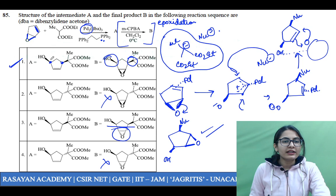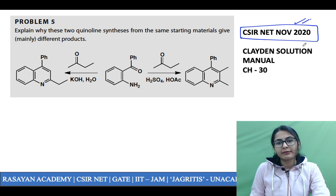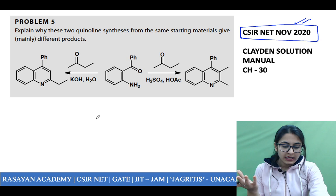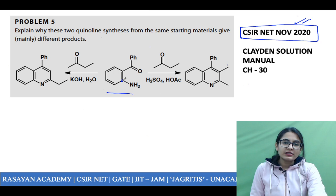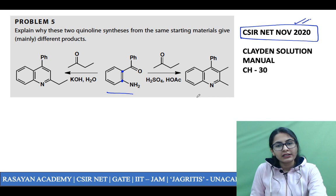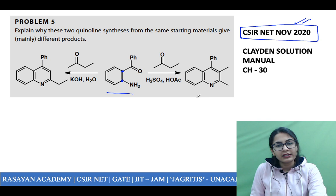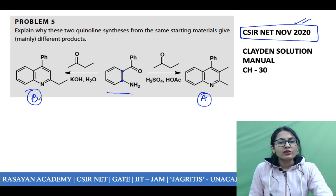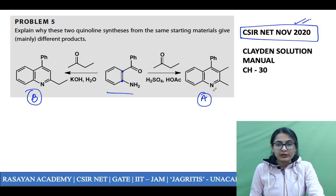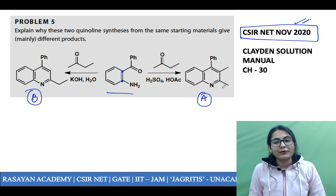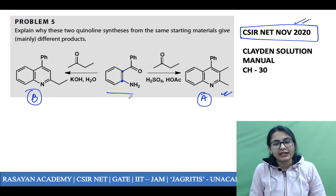A very important question from your CSIR NET exam — a very latest question from Clayden — the November 2020 examination. In your November 2020 paper there was a question where this molecule was given — your ortho-substituted aniline. From that molecule, in which conditions are you going to get this kind of quinoline versus the other kind of quinoline? A very beautiful question — we had just practiced this in Unacademy Plus just a day before the examination. When you want to synthesize the heterocycle from an amine like this, you must first react the carbonyl with the amine to form an enamine system.